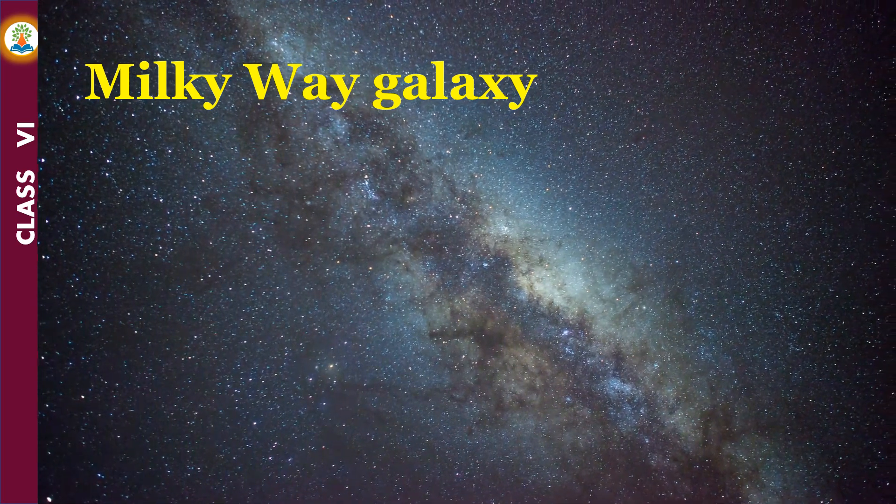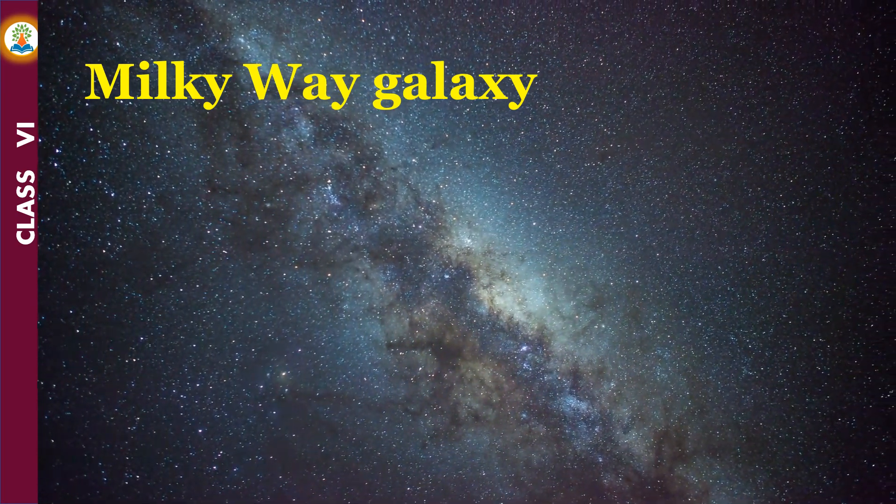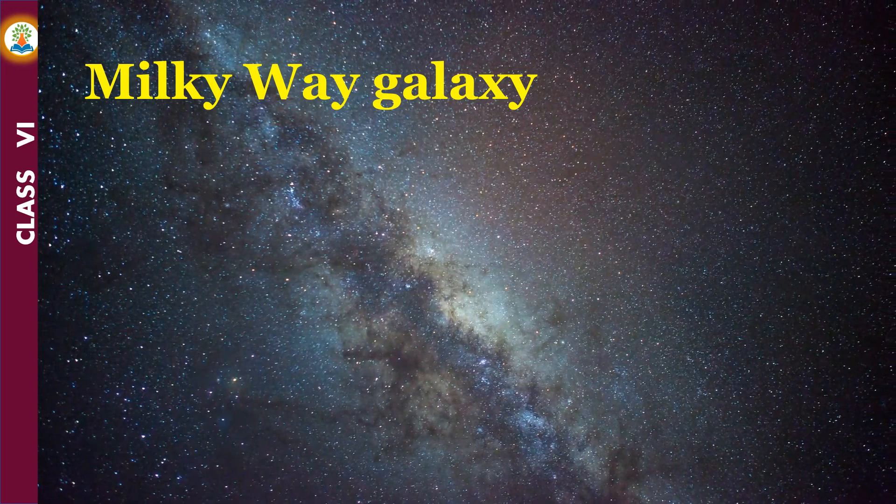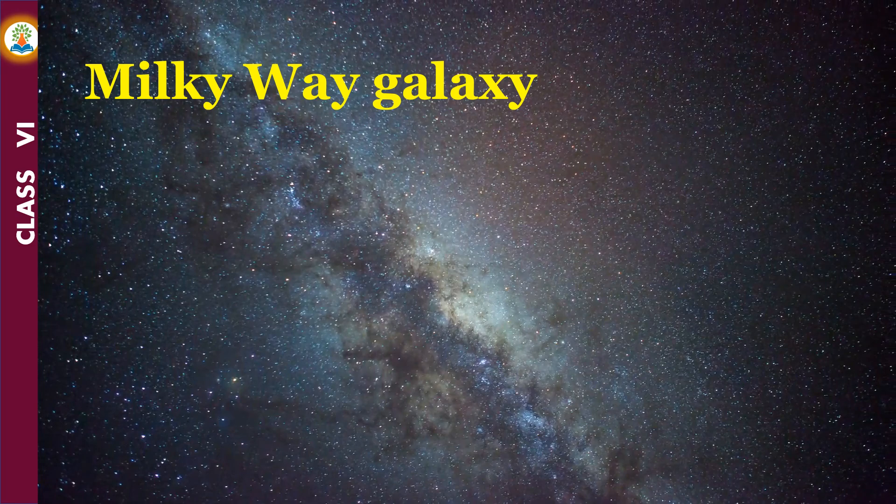The Milky Way galaxy is a cluster of millions of stars. Our solar system is a part of this galaxy. In ancient India, it was imagined to be a river of light flowing in the sky, thus it was named Akash Ganga.